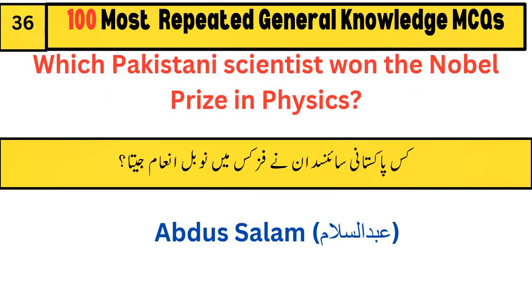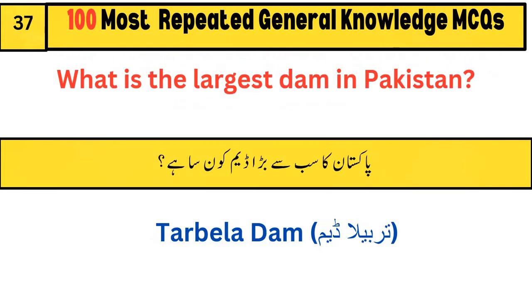Which Pakistani scientist won the Nobel Prize in Physics? Abdus Salam. What is the largest dam in Pakistan? Tarbela Dam.